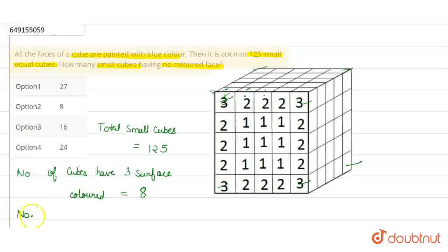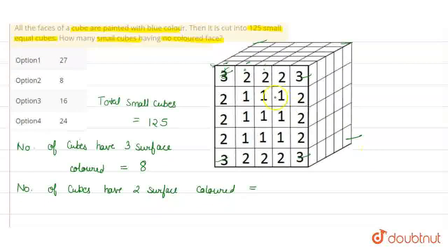Next, we find the number of cubes that have 2 surfaces colored. These are cubes on the edges. How many cubes are on each edge? 3 cubes. And how many edges does a cube have? 12. So when we multiply this, 3 times 12 equals 36. There are 36 cubes that have 2 surfaces colored.